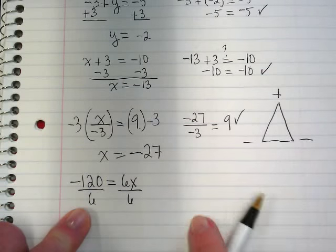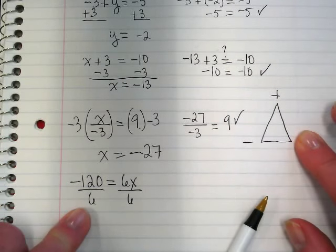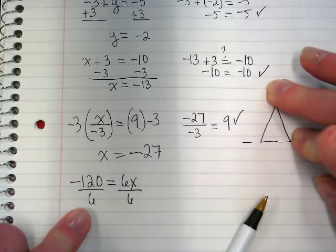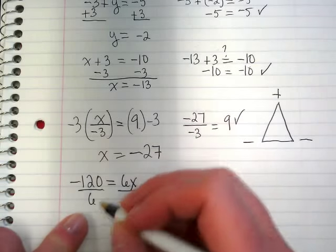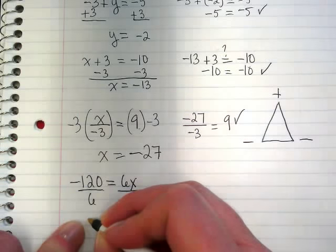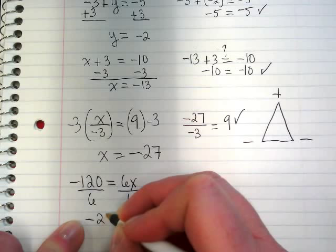Go back into our triangle. Negative 120 divided by a positive 6 is going to give us what kind of answer? Negative. And 120 divided by 6 is going to be negative 20.